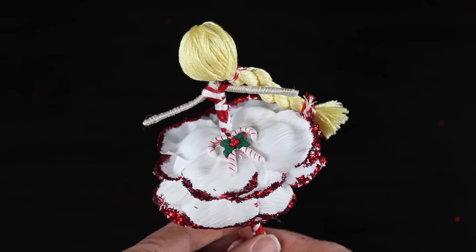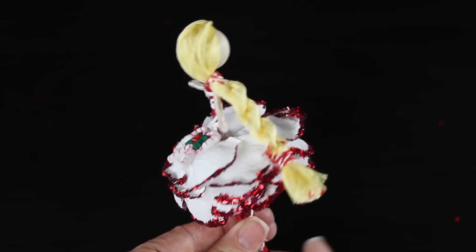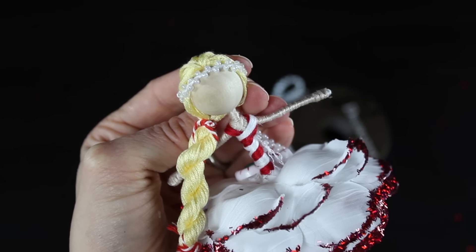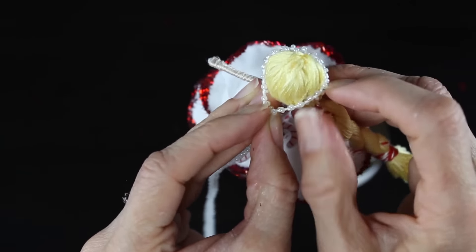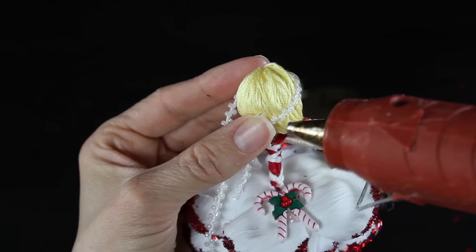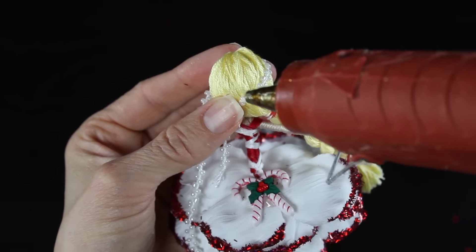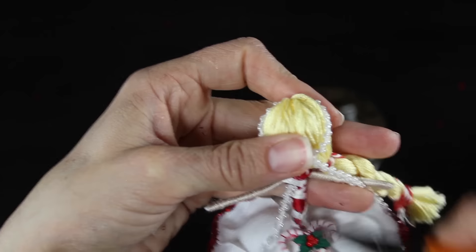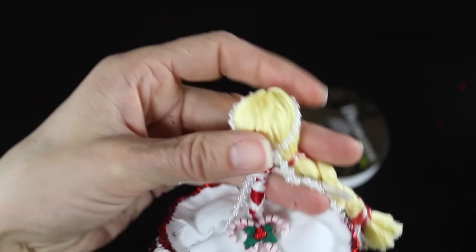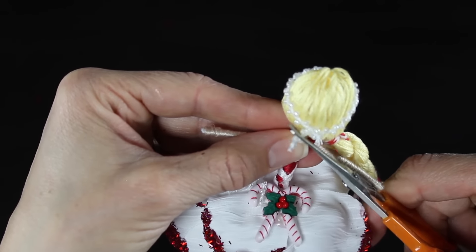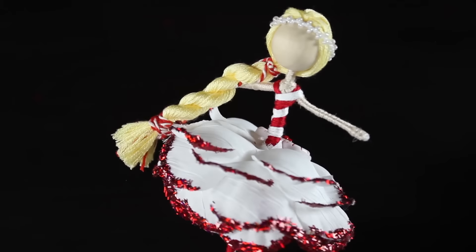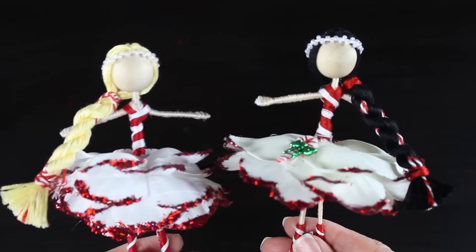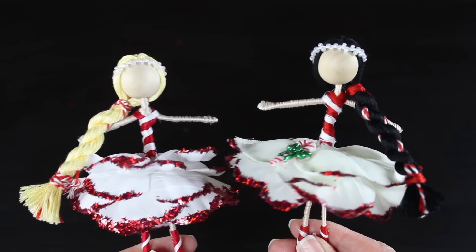The last thing we're going to add is a little crown on top of her head. I found this really pretty white beaded trim. The easiest way with this—because it almost falls apart really easily—is to put a small dab of glue, wrap it around her head, add another dab of glue, and then trim it. Otherwise, if you trim first, all the little beads come unraveled. And that's it, guys! You're all set with a candy cane fairy doll for the holidays.